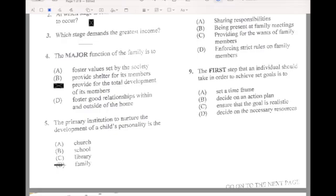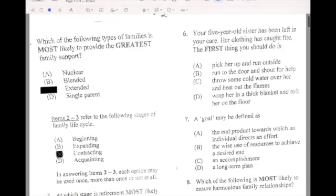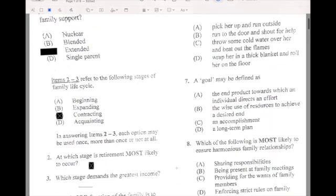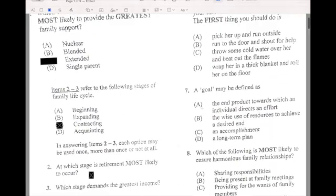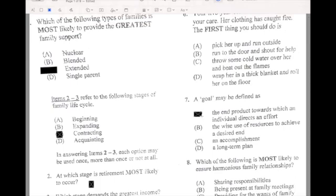Let's go to number six. Your five-year-old sister has been left in your care. Her clothing has caught fire. The first thing you should do is, and if your answer is D, wrap her in thick blanket and roll her on the floor. Number seven, a goal may be defined as, and if your answer is A, the end product towards which an individual directs an effort.